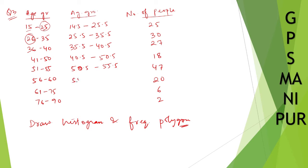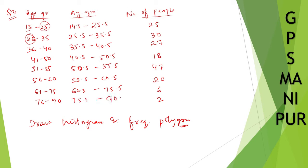Continuing: 56 becomes 55.5, 60 becomes 60.5, 61 becomes 60.5, 75 becomes 75.5, 76 becomes 75.5, and 90 becomes 90.5. That completes the conversion to continuous class intervals.